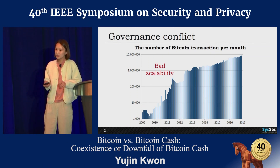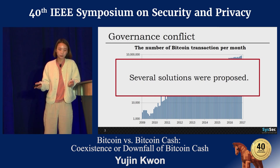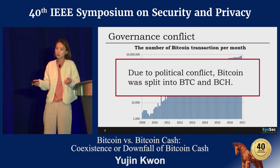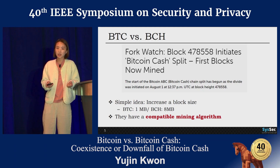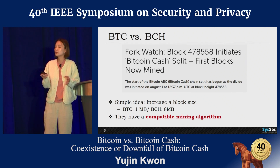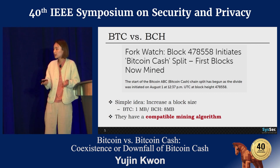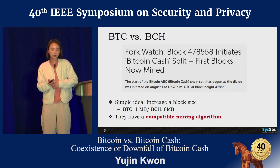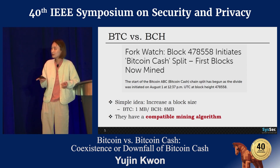First, what is Bitcoin Cash? Bitcoin suffers from bad transactional scalability, so several solutions were proposed. However, there was political conflict on these solutions, and Bitcoin was eventually split into Bitcoin and Bitcoin Cash, or BCH. BCH has increased transaction scalability through the simple idea of increasing block size. Bitcoin has one megabyte as block size while Bitcoin Cash has eight megabytes. Nevertheless, they have a comparable mining algorithm, meaning miners can conduct both BCH and BTC mining with one mining hardware.